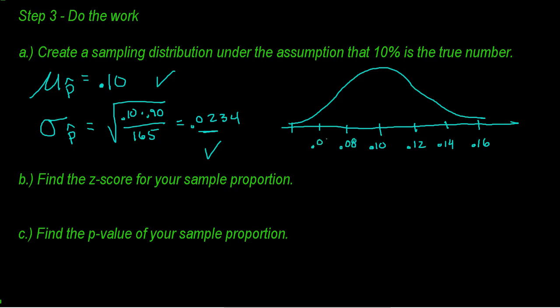Because that third condition passed, the shape is going to be normal. Right smack dab in the middle is 10%. I'm going to go up 1, up 2, up 3, down 1, down 2, down 3. This picture is important because it allows me to get a picture of all p-hats that are out there.